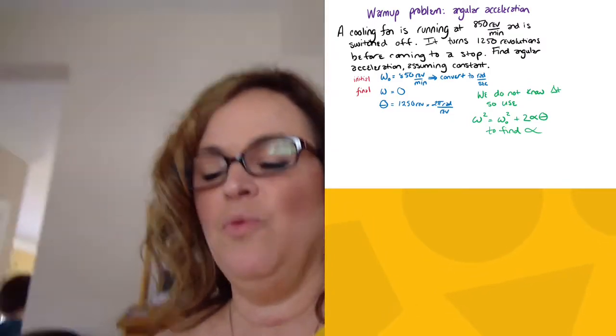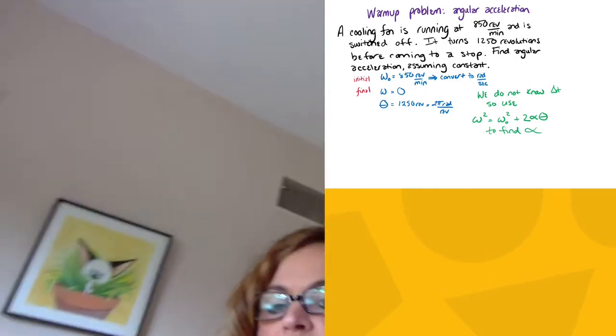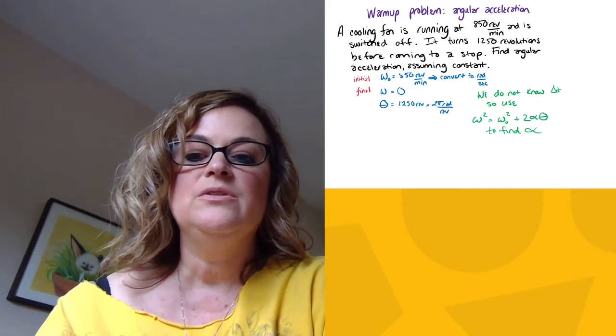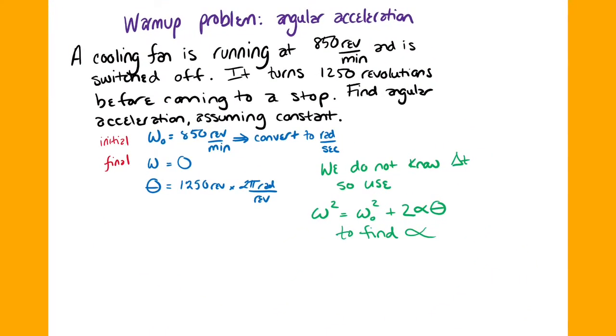So let's look at a warm-up problem with angular acceleration. So we did not calculate anything with angular acceleration yet, so I just wanted to show you how you would do that. So let's imagine you've got a fan, a cooling fan that's running at 850 revolutions per minute, and it switched off. So in that switching off, it turns 1250 times before it comes to a stop. So if you're trying to find the angular acceleration of something like that, assuming that angular acceleration is constant, what would you do? Well, just like in prior problems, you first define your initial conditions and your final conditions, like I always tell you to do.